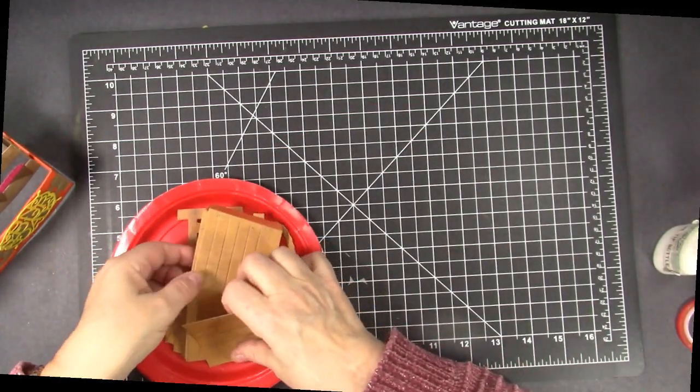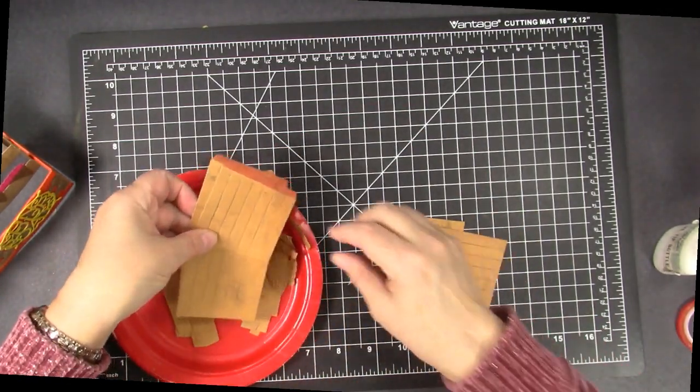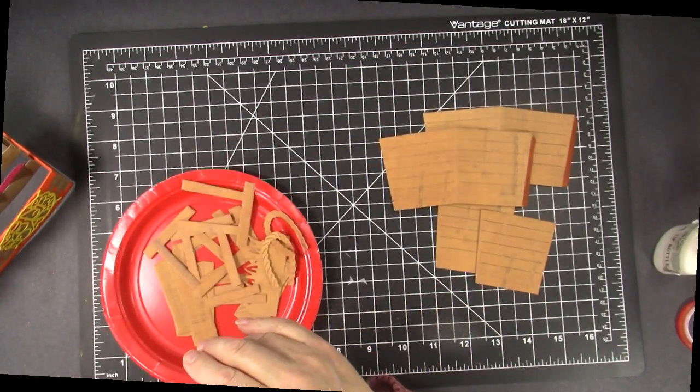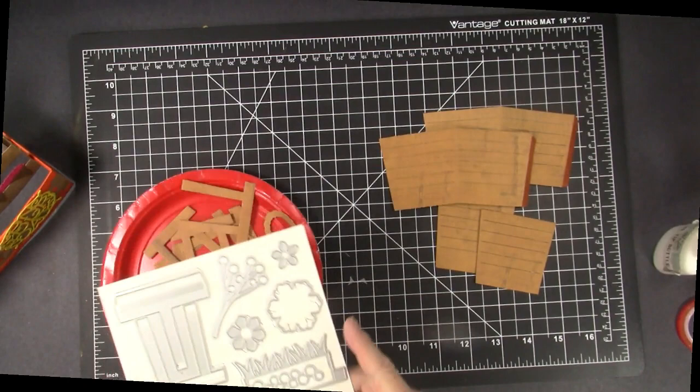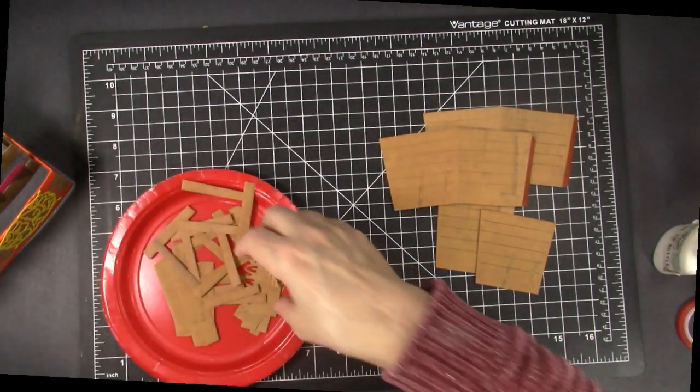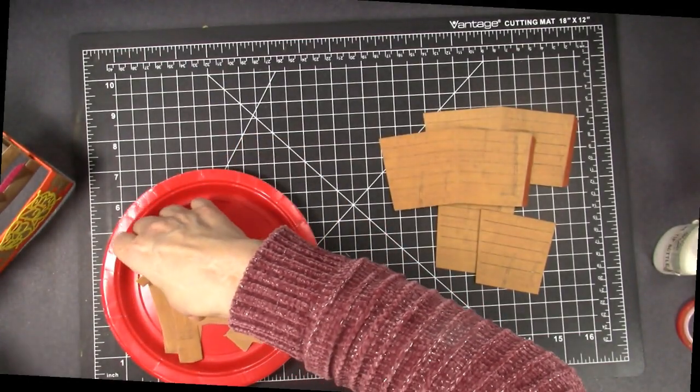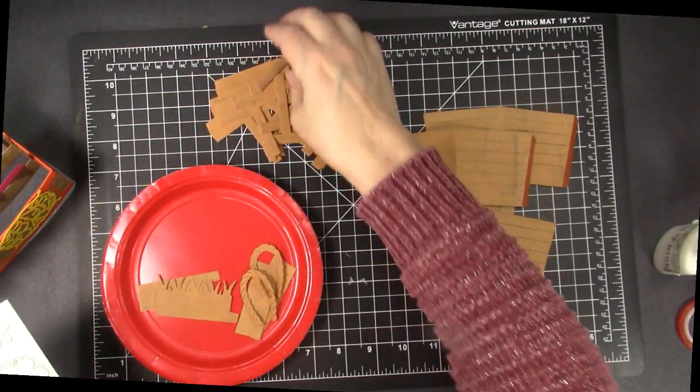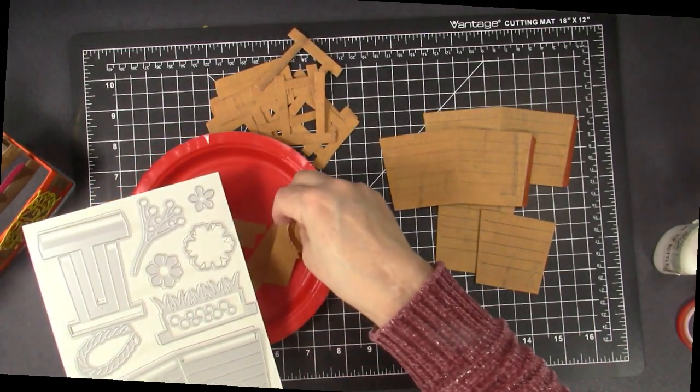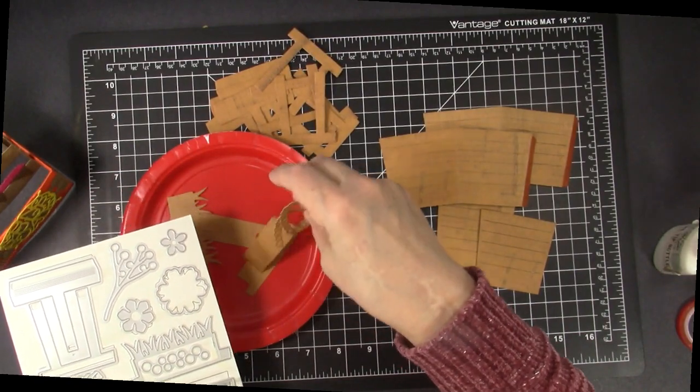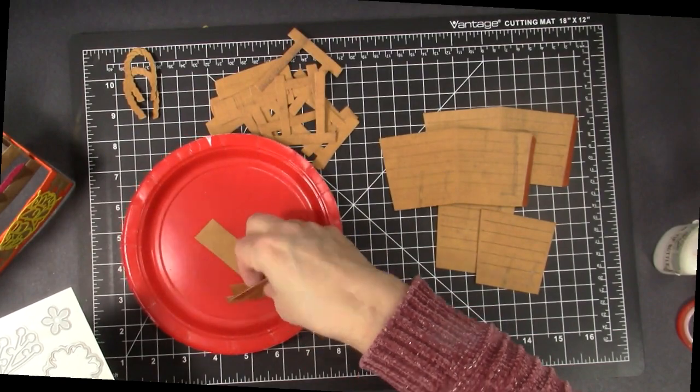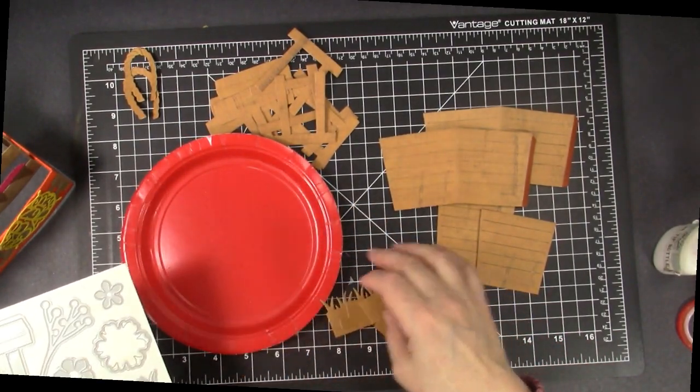So to make the double wide you cut three of the main piece and then you cut six of the weaving pieces when you're doing the double wide. We need two of the side handle pieces and then you need four of the pieces that go across the inside.